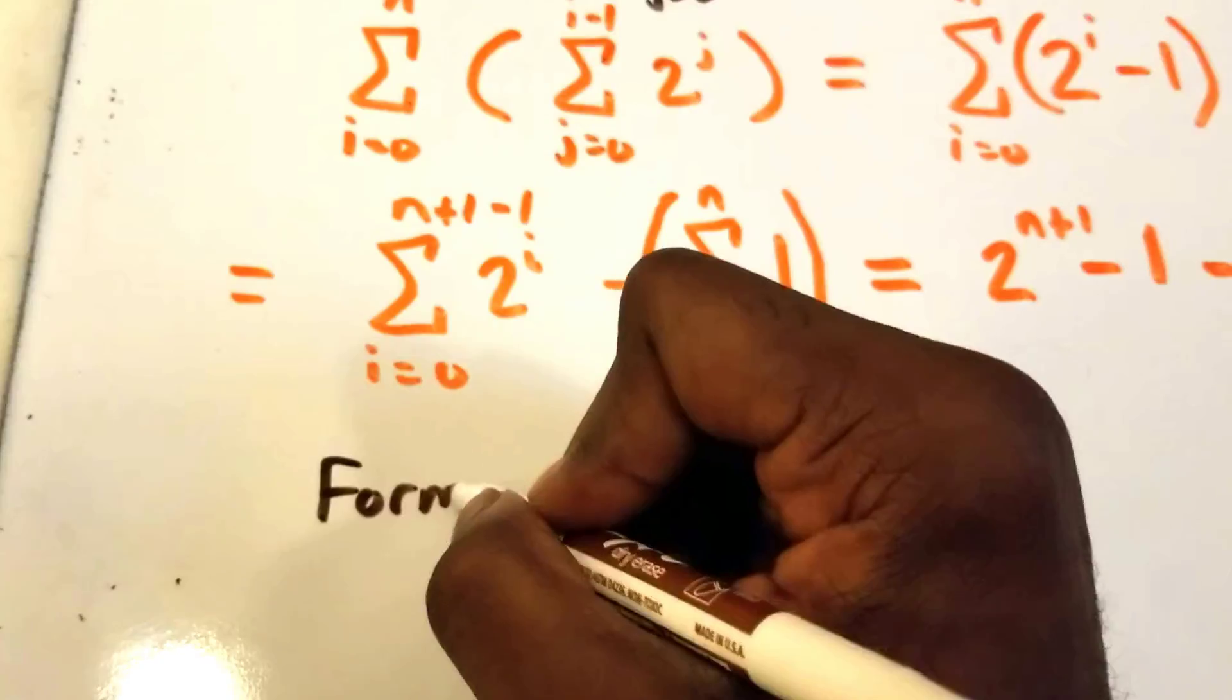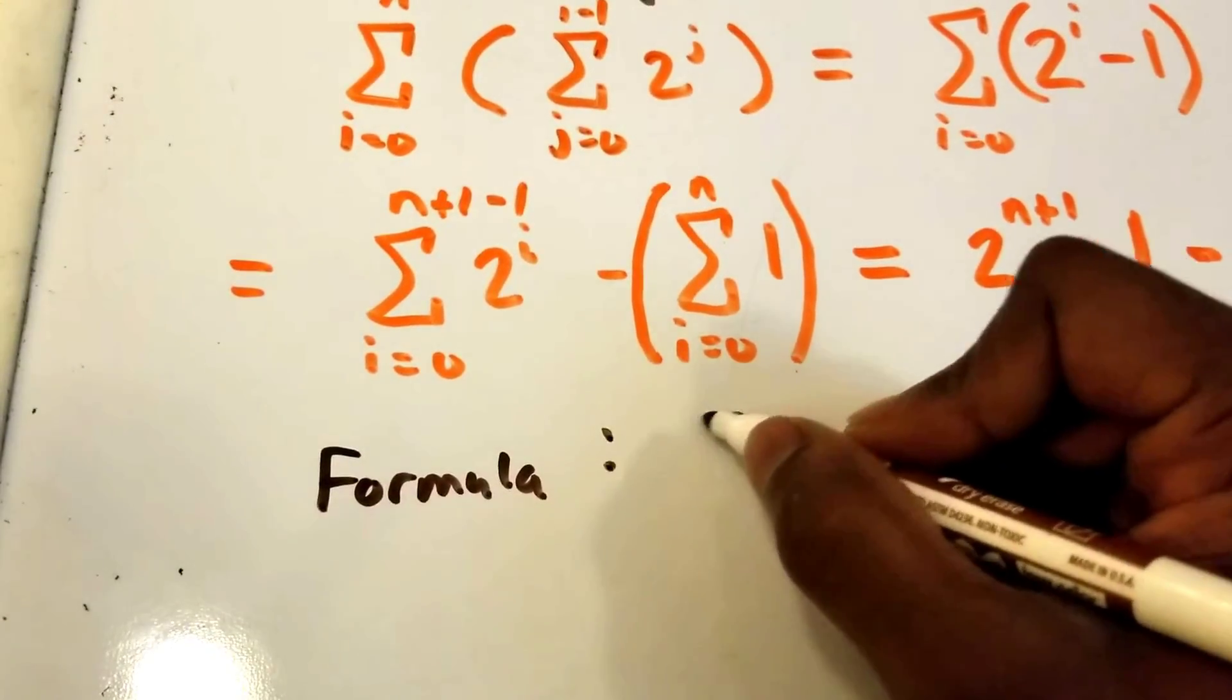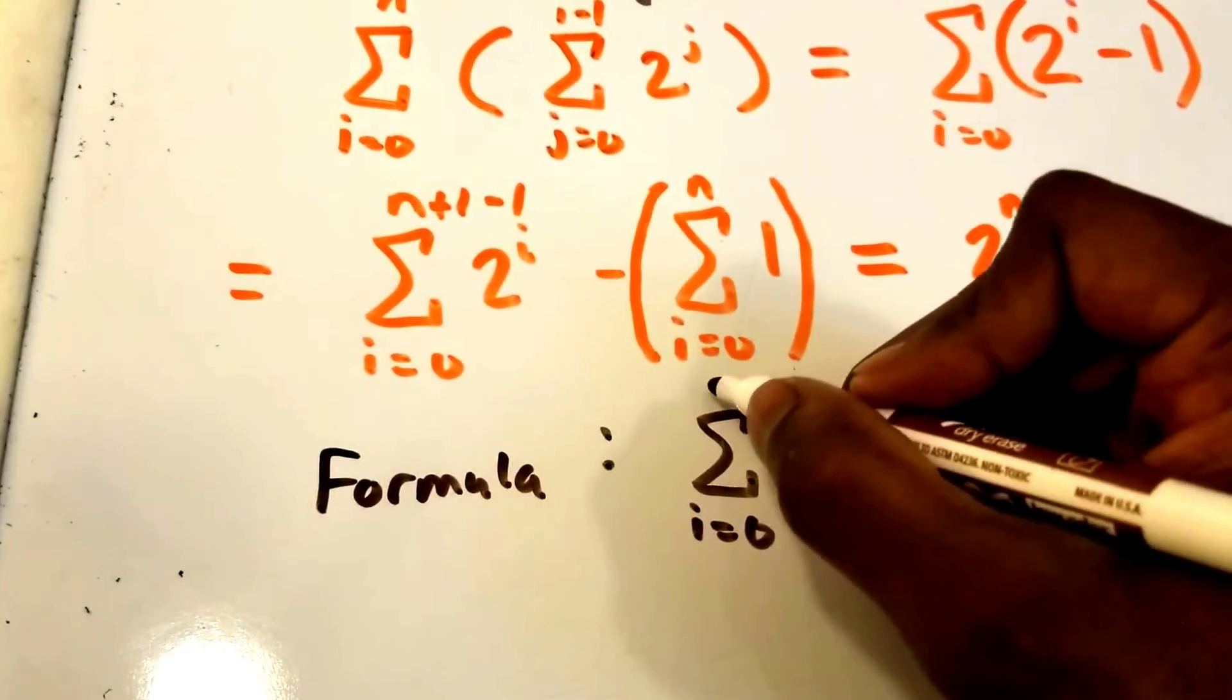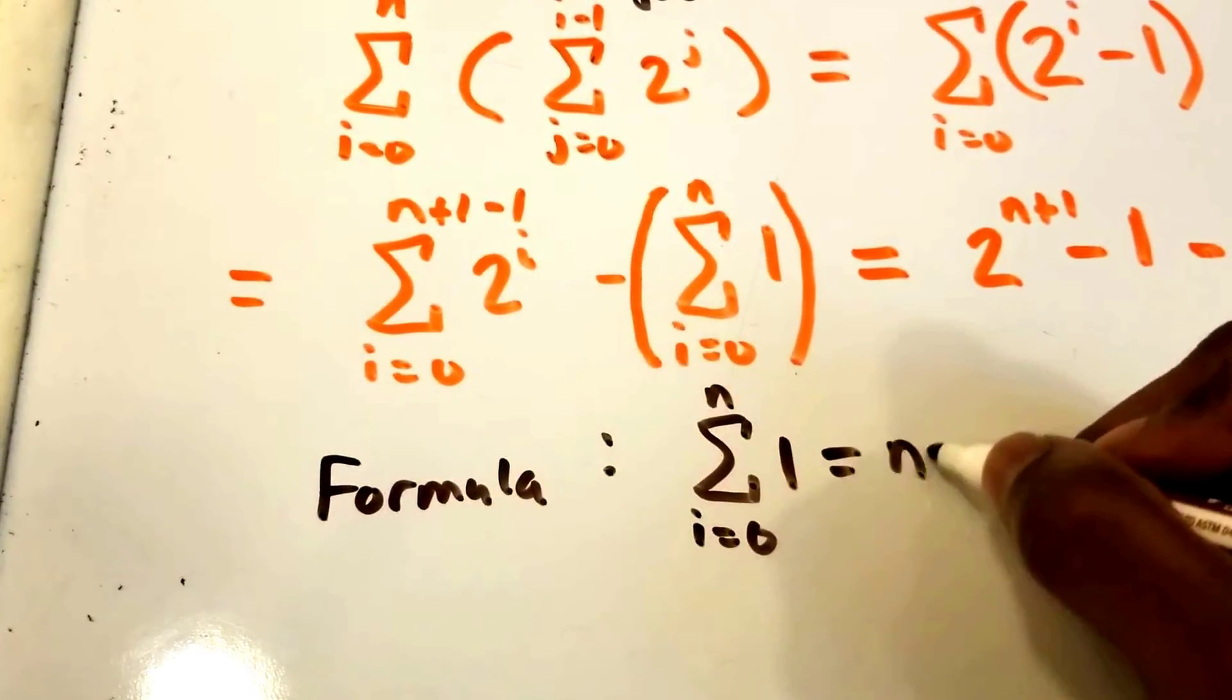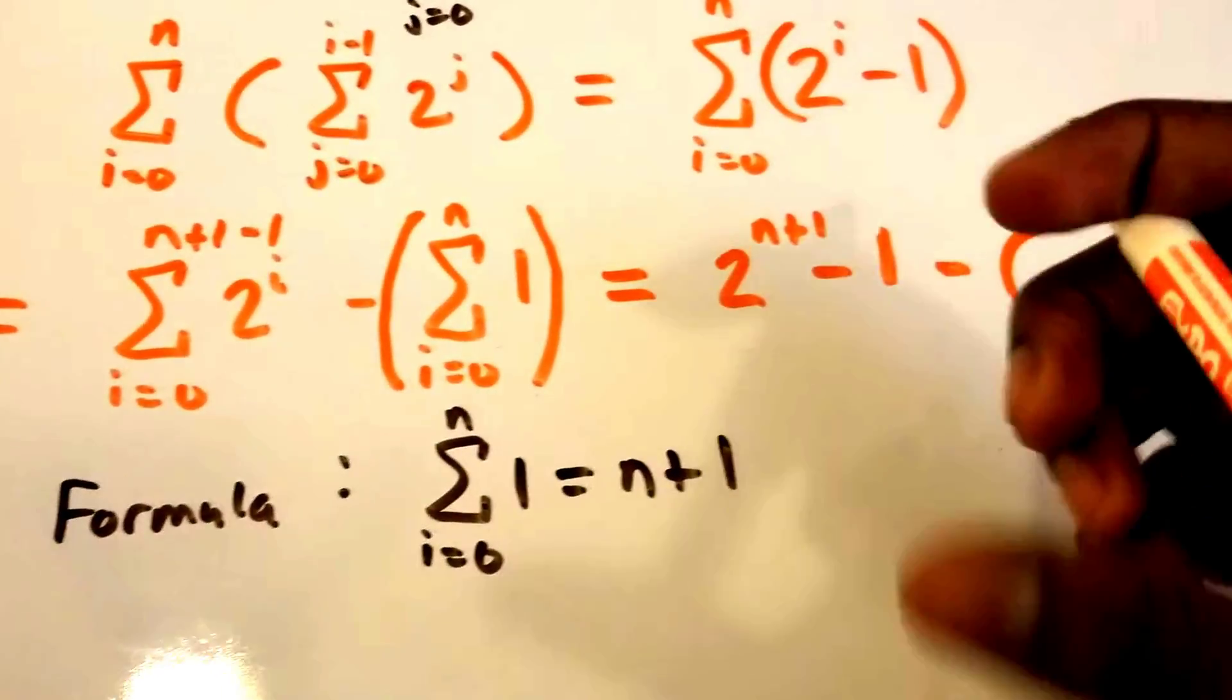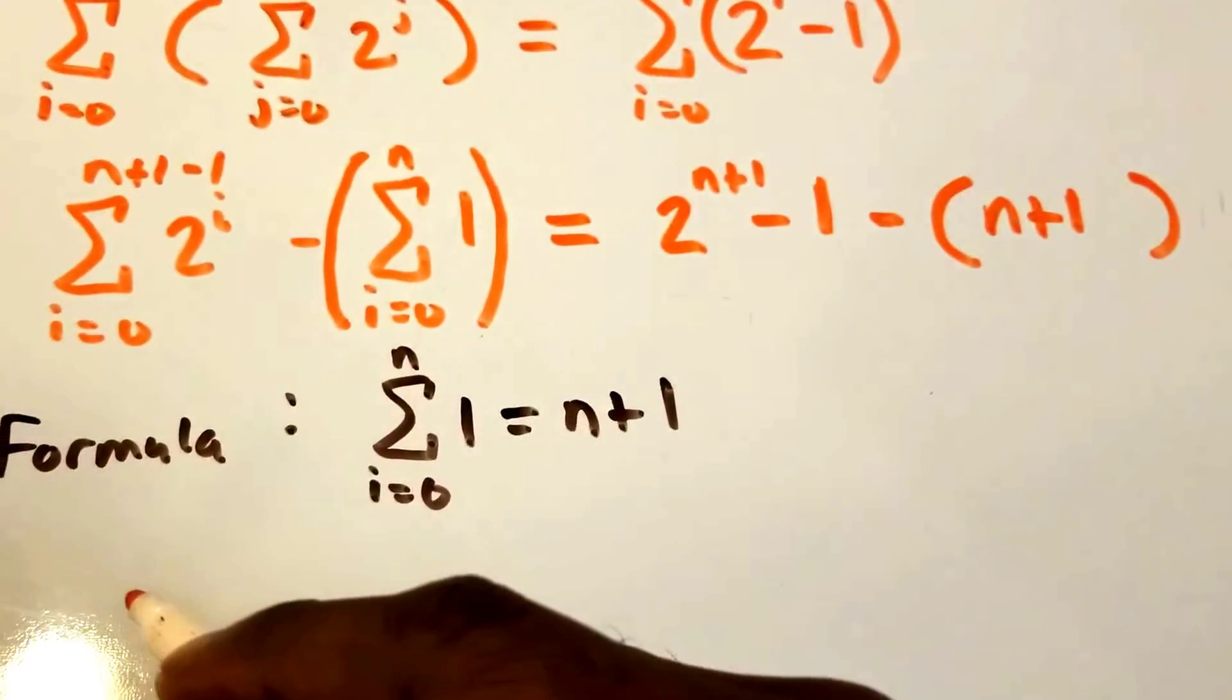Well, there's another formula we can use. This formula states that if we have a summation from i equals 0 to n of 1, then that is equal to n plus 1. And so we're going to write this right here as well. So we have n plus 1.